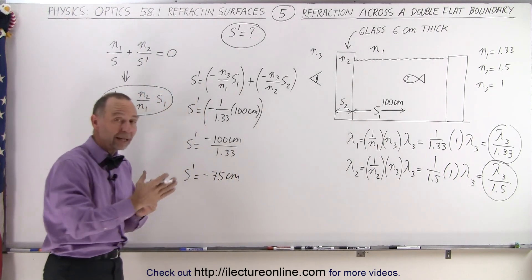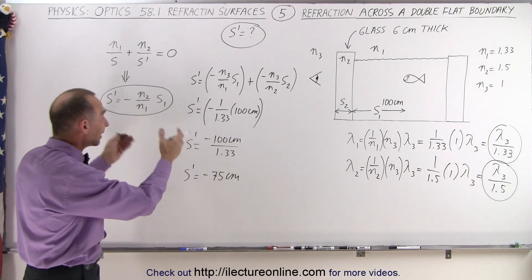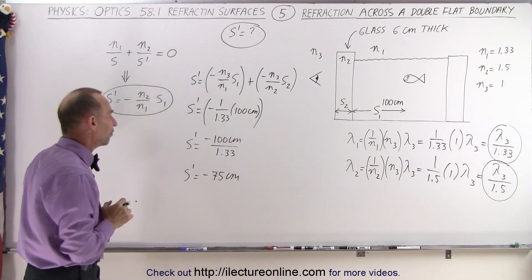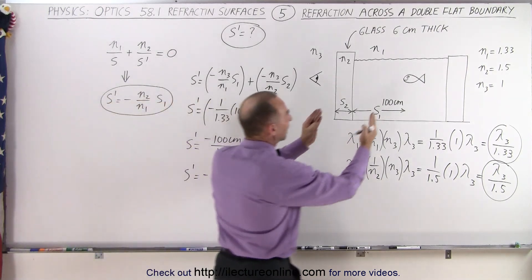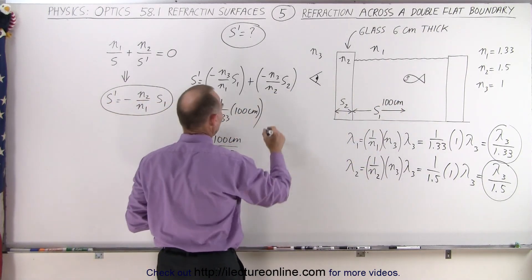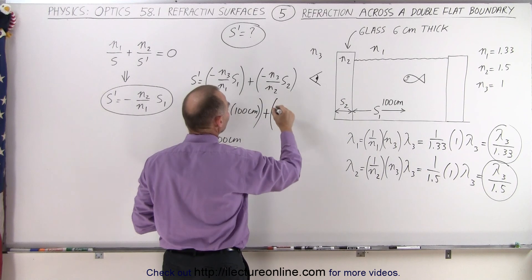So S prime is equal to minus 75 centimeters. And this is the result that we got in the previous video where we calculated the distance of the image of the fish. But that's not all, that's only for the portion in the water.